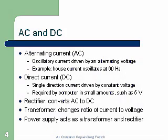Direct current, DC — a single-direction current driven by constant voltage. This is a voltage that does not change, and this is what we need for our electronic components inside the computer, especially for our binary ones and zeros. One would be five volts, zero would be zero volts. Required by computers in small amounts, such as five volts for our logic.